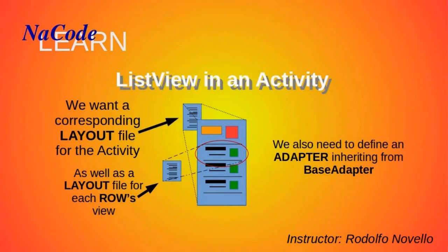We will see what the activity's corresponding layout file looks like, as well as how to create the layout view for each row on the list. We will also learn how to populate each row and how to define the adapter that will bind our data model. So let's get started.